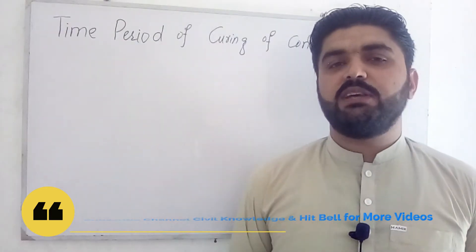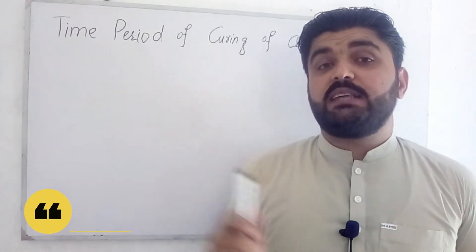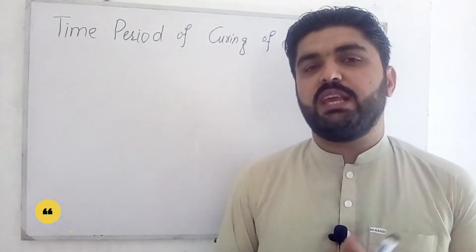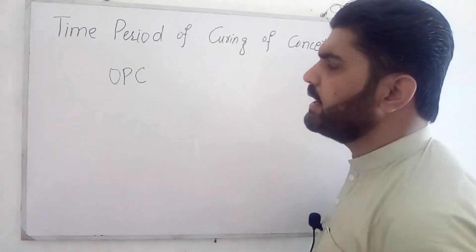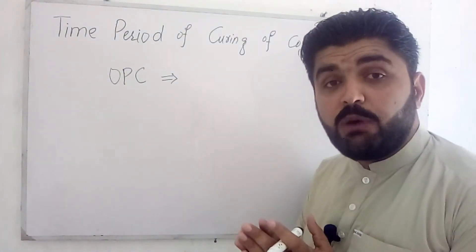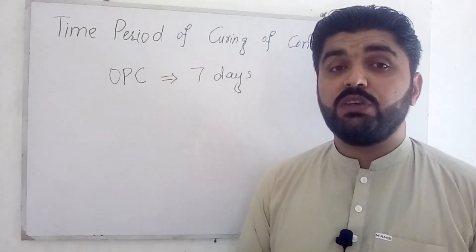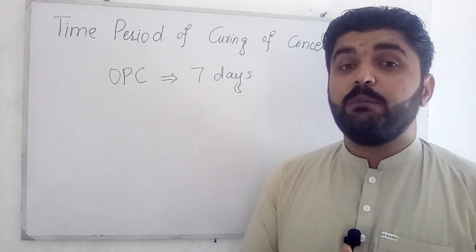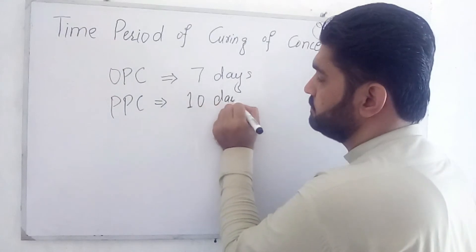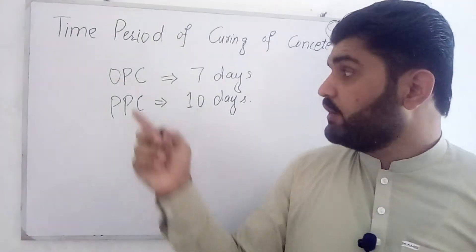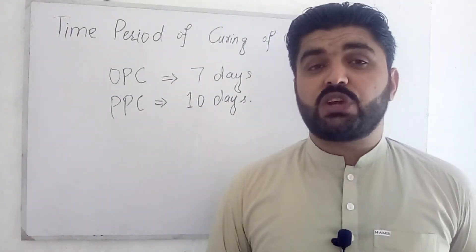Our third question is about the time period of curing — for how many days should we water fresh concrete? It depends on the type of cement used. If we are using OPC (Ordinary Portland Cement), we cure the concrete for a minimum of seven days. If we are using PPC (Portland Pozzolana Cement), the minimum curing period is ten days. These are the minimum days; we can cure for more, since concrete can achieve full strength up to 28 days.